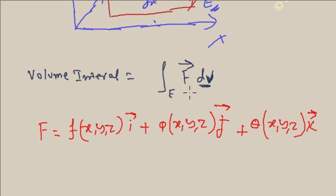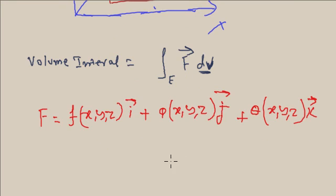As F is a vector quantity and it is dependent on position, F can be written as f(x,y,z) i + φ(x,y,z) j + θ(x,y,z) k. And dv can be written as dx dy dz because dv is a scalar quantity.